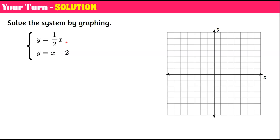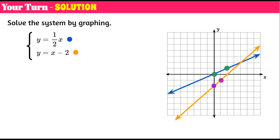Welcome back. Step one: graph each equation. The first equation is one half x plus zero, so the y-intercept is zero. I rise 1 and run 2 to plot my second point and connect the line. For the orange equation, the y-intercept is negative 2. The slope is 1 — that invisible coefficient is 1 — so I rise 1 and run 1, plot a point, and connect my line. Step two: identify the point of intersection, which is positive 4, positive 2.